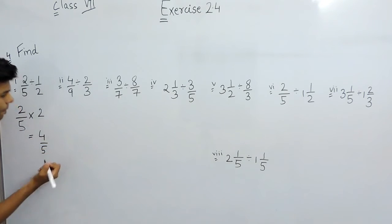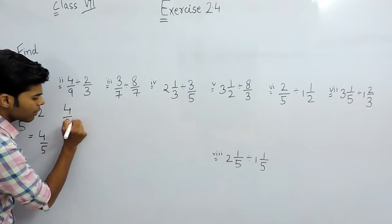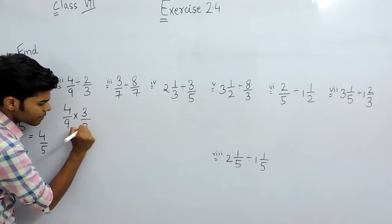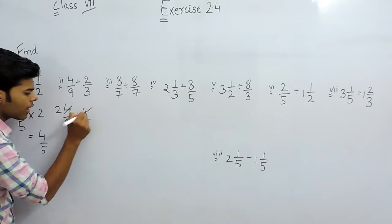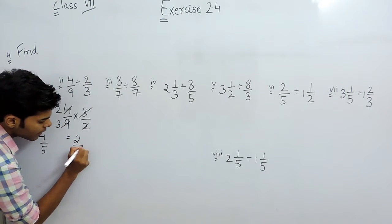So it will be 4 by 5, now in this one it will be 4 by 9 multiplied with 3 by 2, 2 times and 3, 3 times. So answer will be 2 by 3.